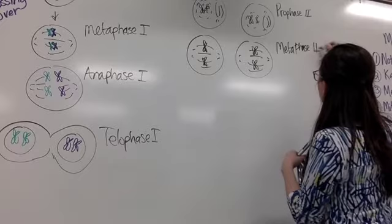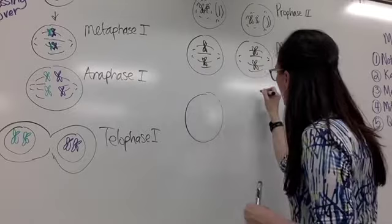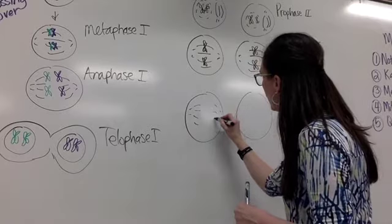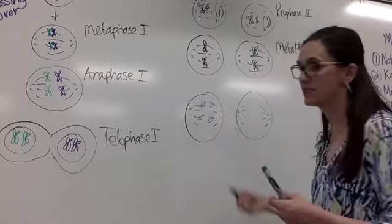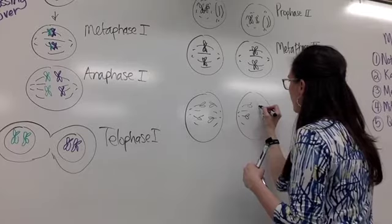Then each one of these goes into anaphase 2. So we see the spindle fibers shortening this time. See the chromatids? Oh, that looks like my toast, doesn't it? Okay, this is very similar. So we see the chromatids pulling away from each other this time.